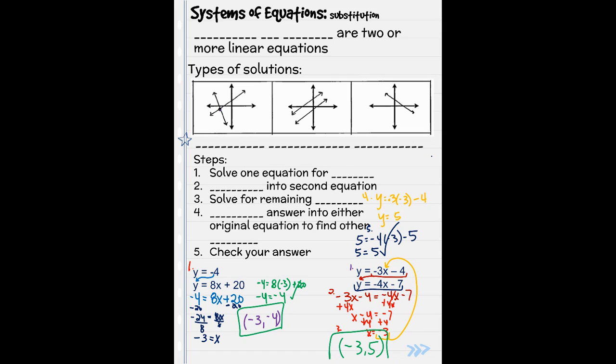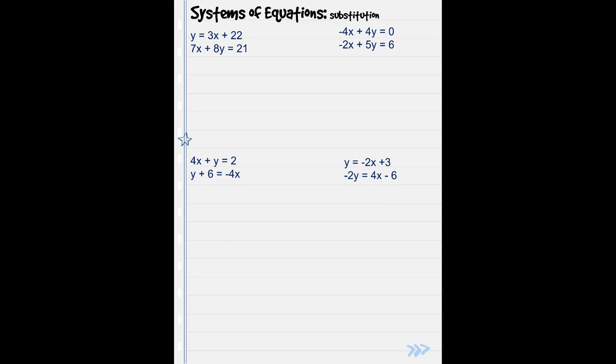Those other examples on the back. Looking at this one, step one is solving one of your equations for one of your variables. Look, y is already over by itself, so it's already solved for y. So I can move on to step number two. I'm going to plug this entire equation into y. So I leave everything else, 7x plus 8 now times 3x plus 22 equals 21.